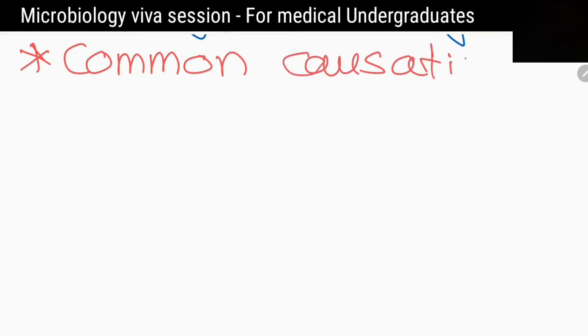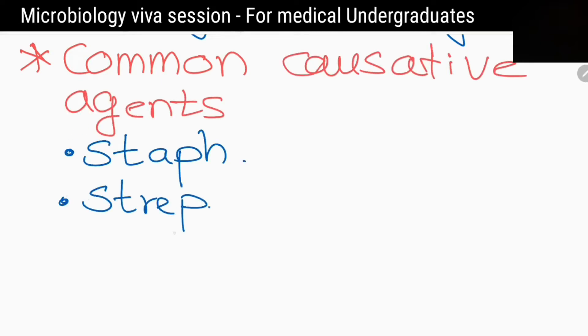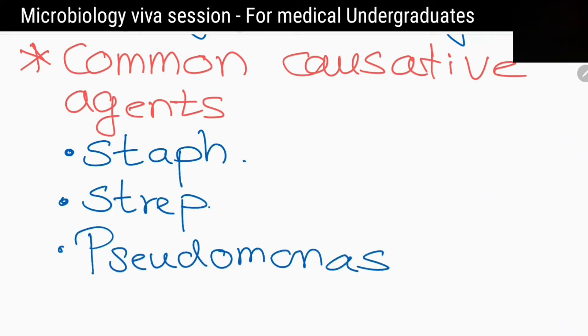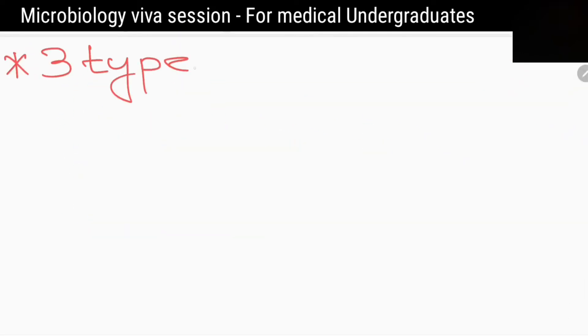What are the common causative agents? Staphylococcus species, Streptococcus species, and Pseudomonas species. What are the three types of Surgical Site Infections?